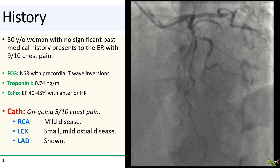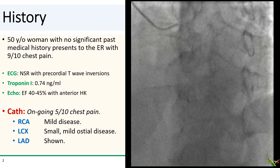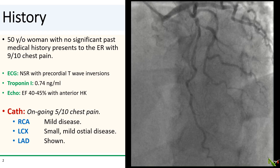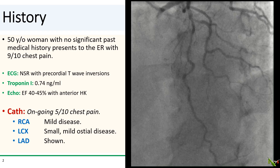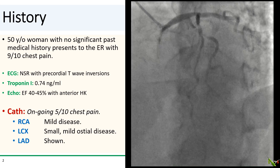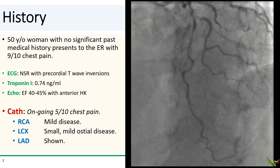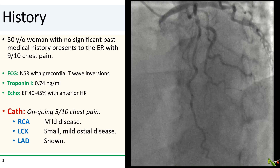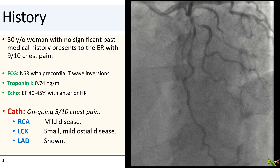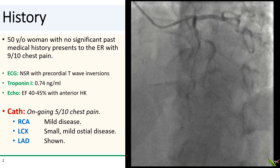The patient is a 50-year-old woman with no significant medical history who presented to the ER with severe chest pain. ECG showed precordial T wave inversions. Initial troponin was positive at 0.74, and ECHO showed EF of 40 to 45% with anterior hypokinesis.